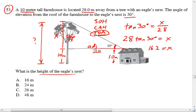So that's x. Now I need to find the total height of the tree. Well, the total height is just that 10 meters of the farmhouse plus the 16.2 meters that we found, which is about 26.2 meters. So the closest answer there is C, 26 meters. That's the height of the eagle's nest.